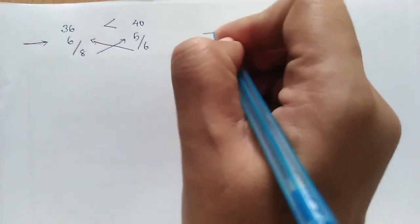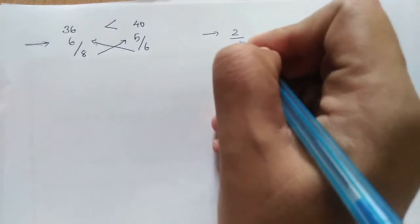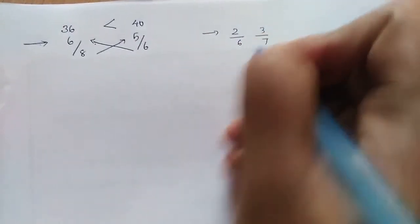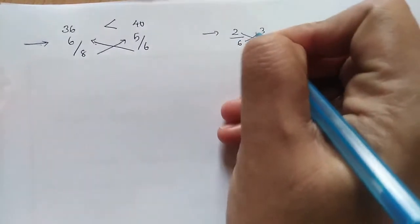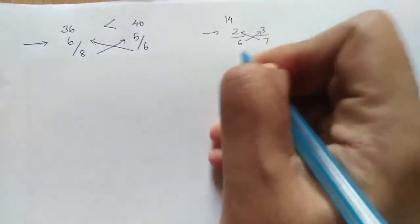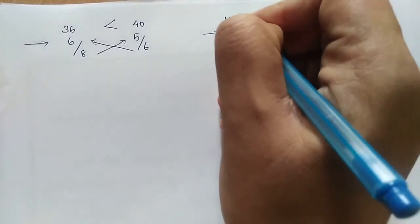Another example: 2/6 and 3/7. Cross multiply: 14, this one 18. This is largest, so 3/7 is largest.